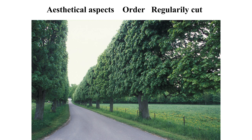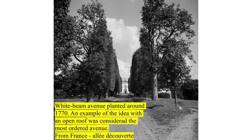And then you also have regularly cut trees. This is the tree that leads up to the church at Öved's Closter — they are regularly cut lime trees. This is the predecessor on the same road from some 80 years ago: a white beam avenue planted in the late 19th century. It's an example of how you ordered even the trees — you wanted to have this open roof, which you can see in several historical sources, whereas today it is quite rare.